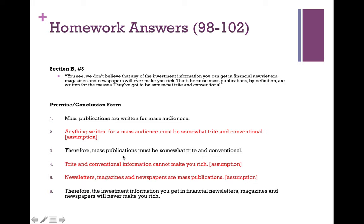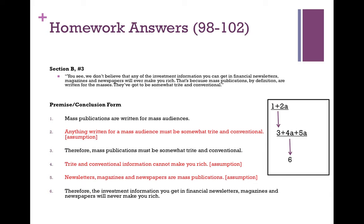Mass publications must be somewhat trite and conventional. Then it's assuming that anything trite and conventional — or trite and conventional information — can't make you rich. Another assumption, and I was hesitant to include this, is that newsletters, magazines, and newspapers are mass publications. It doesn't explicitly say that, but it seems clearly implied. So: newsletters, magazines, and newspapers are mass publications. Therefore, the investment information you get from financial newsletters, magazines, and newspapers will never make you rich. We can diagram the argument as: 1 plus 2A leads down to 3, and then 3, 4, and 5 all lead down to 6. This is how all parts of this argument fit together.